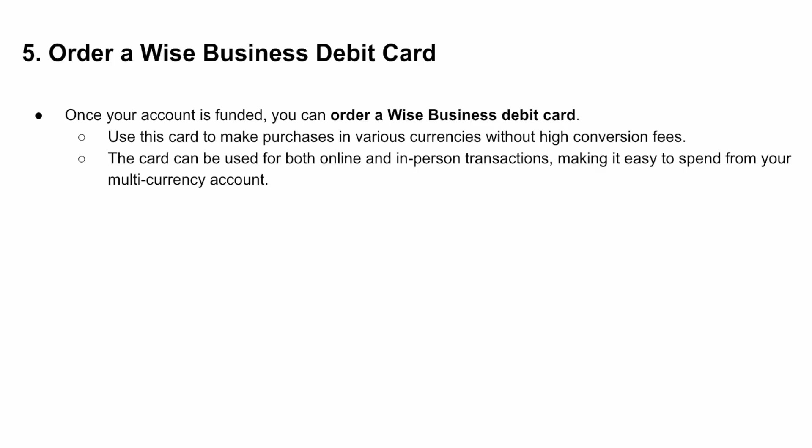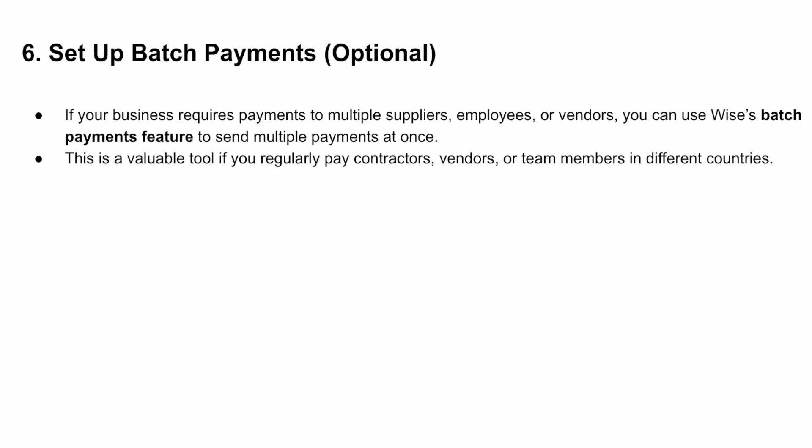Once your account is funded you can order a WISE business debit card. You can use this card to make purchases in various currencies without high conversion fees. The card can be used for both online and in-person transactions, making it easy to spend from your multi-currency account. Optionally, if your business requires payments to multiple suppliers, employees, or vendors, you can use WISE's batch payments feature to send multiple payments at once — a valuable tool if you regularly pay contractors or team members in different countries.